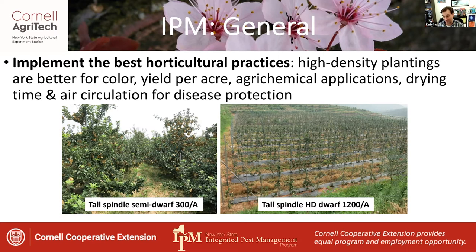Looking at the tall spindle planting at 1,200 trees to the acre, you can easily see how much easier that would be to cover and how much shorter drying time would be needed to keep those fruit and leaves dry, as compared to the tall spindle semi-dwarf orchard, which looks like a jungle and would just be a haven for disease, even as clean as that particular one looks.